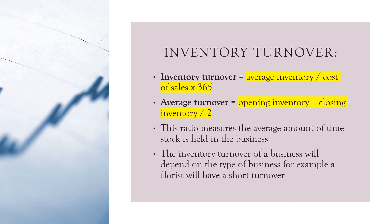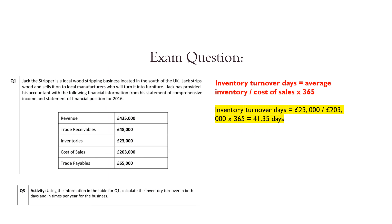Inventory turnover. Inventory turnover is average inventory divided by cost of sales times by 365. To work out average inventory, you do opening inventory plus closing inventory divided by 2. This ratio measures the average amount of time the stock is held in the business. Inventory turnover will depend on the type of business — for example, a florist will have a short turnover because they have to get rid of flowers quickly. Using the same data, the inventory is £23,000 divided by cost of sales of £203,000 times by 365, which gives us 41.35 days.